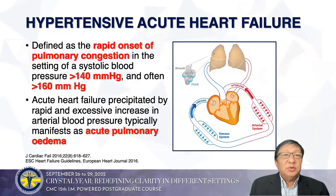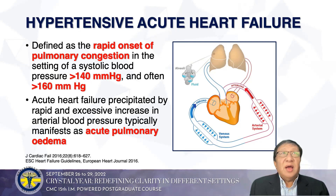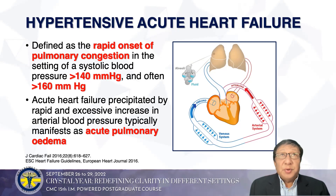Hypertensive acute heart failure occurs because of rapid onset of pulmonary congestion in the setting of a systolic pressure of 140 mmHg, and often greater than 160 mmHg. Acute heart failure is precipitated by a rapid and excessive increase in arterial BP, typically manifested as acute pulmonary edema. The heart bears the burden of target organ damage, where increased systolic BP can lead to myocardial hypertrophy, left ventricular hypertrophy, and impaired diastolic function.